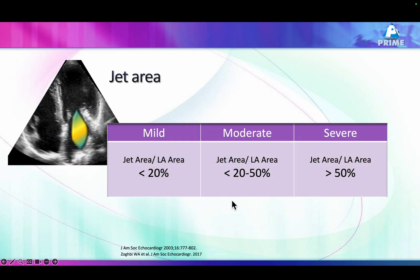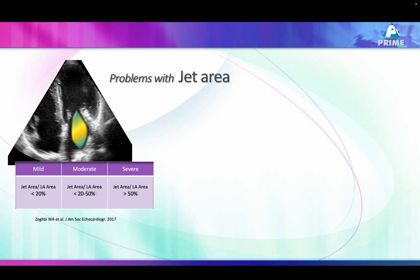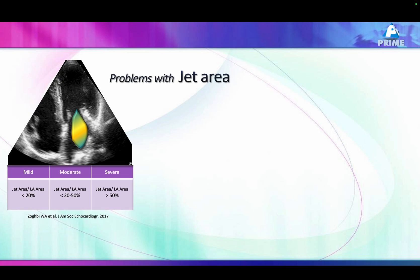Let me elaborate on these points further. Day in and day out, we all make a mistake: we just do color Doppler jet area and LA area, then say this is the degree of mitral regurgitation. We don't take into account the other parameters. Today I'm going to tell you to take into account all other parameters to make a proper assessment of mitral regurgitation. The problem is that if you depend upon just the jet area to LA area ratio, so many times the jet is eccentric.